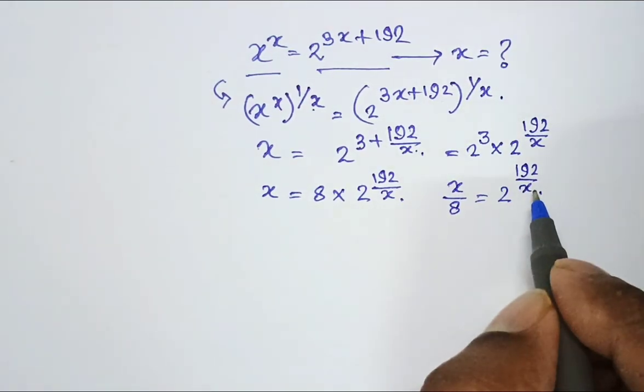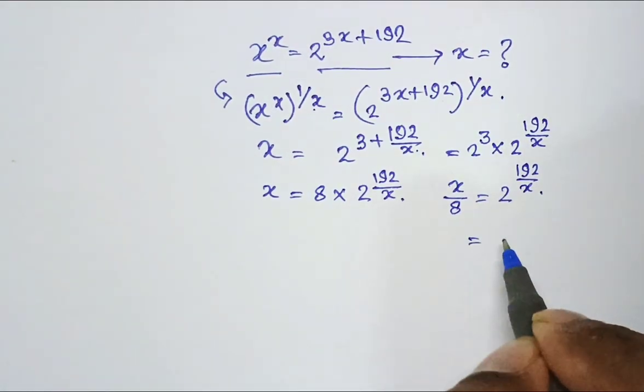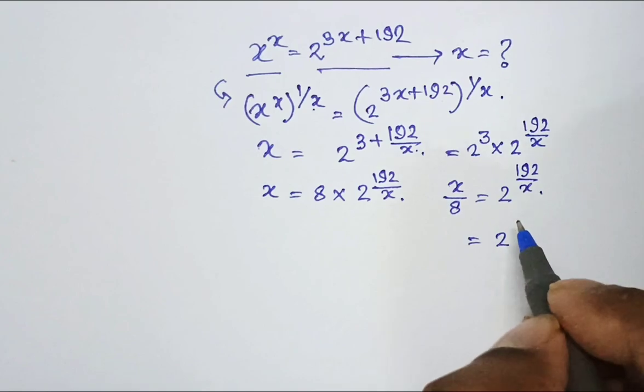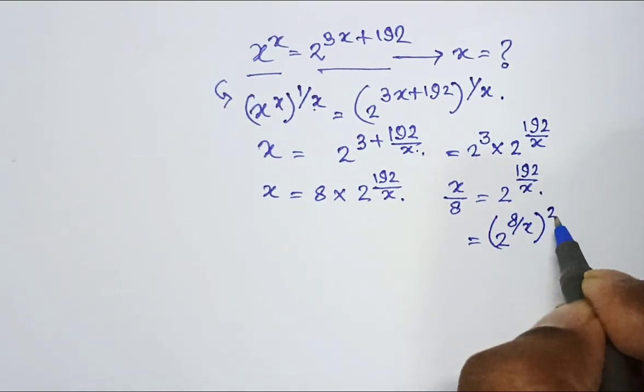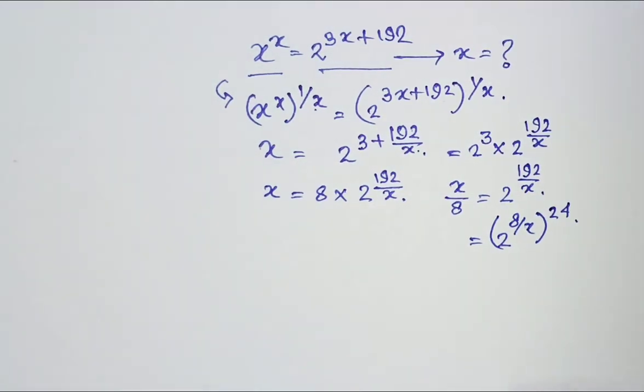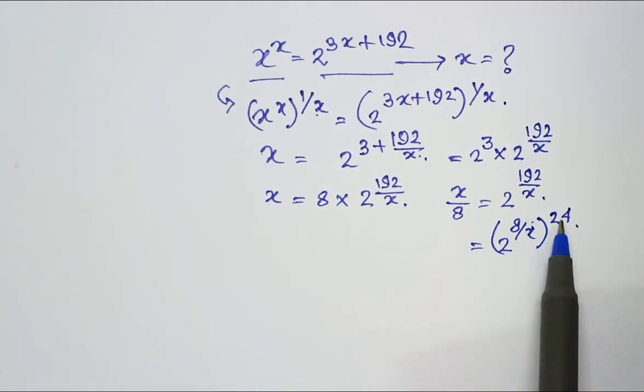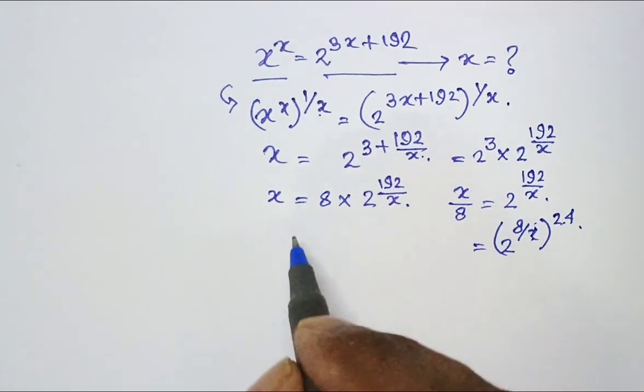I can write the right side expression, 2 to the power 192 by x, as 2 to the power 8 by x whole to the power 24. This is the trick. Why I am writing this? Because 8 into 24 is 192 and in the denominator index it is already x over there.